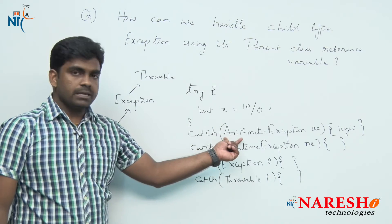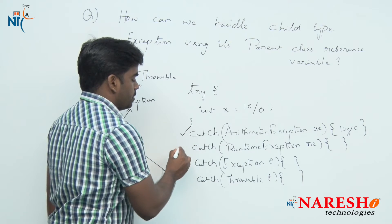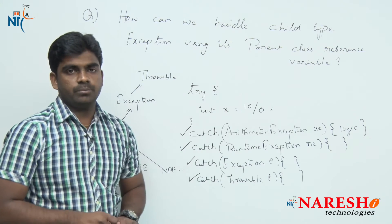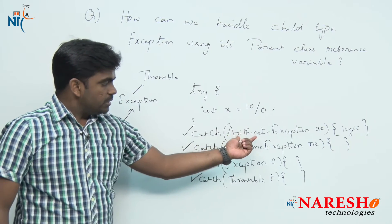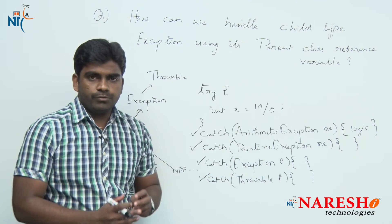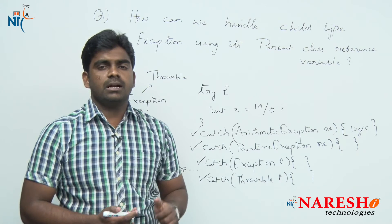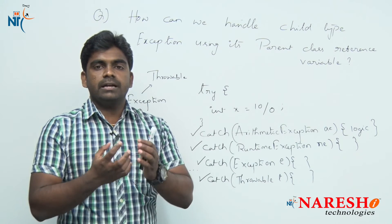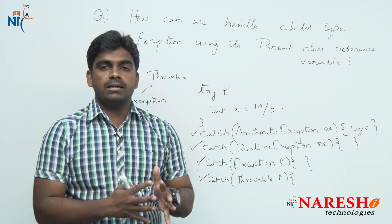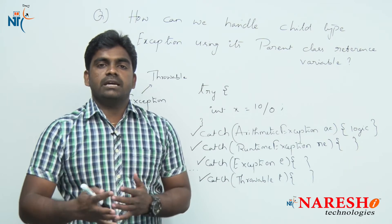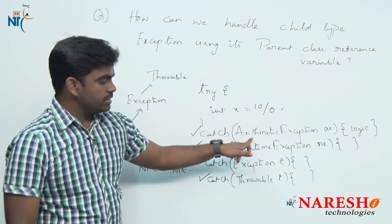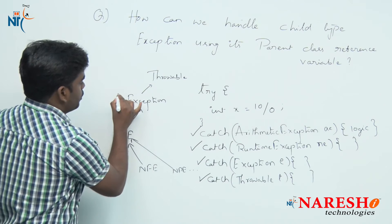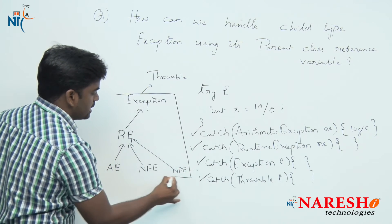If you want to handle ArithmeticException, either we use ArithmeticException, or RuntimeException, or Exception, or Throwable — why is it allowed? Whenever there is a chance of getting an ArithmeticException, we know the runtime polymorphism concept. Runtime polymorphism means accessing a child object's functionality using a parent type reference variable — the address is parent type and the functionality is child functionality.